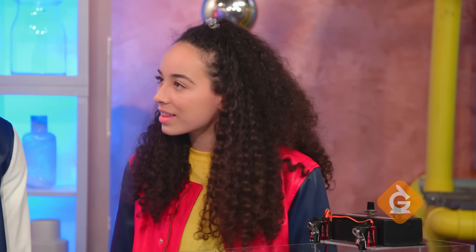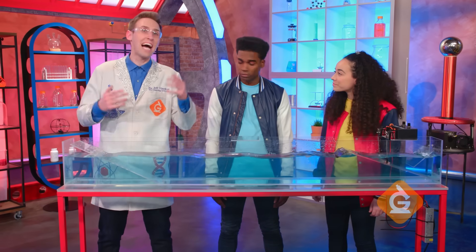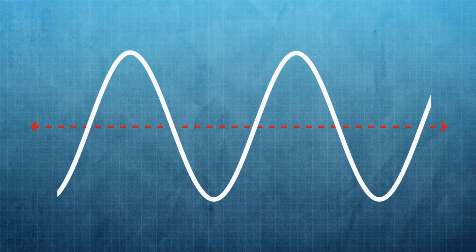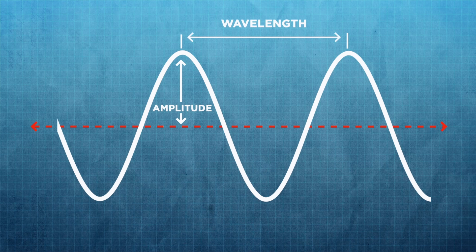Can you measure amplitude and wavelength? Yep! Scientists do it all the time. The amplitude is the distance from the wave's peak to its resting point, which is the level of calm water. The wavelength is the distance from peak to peak.